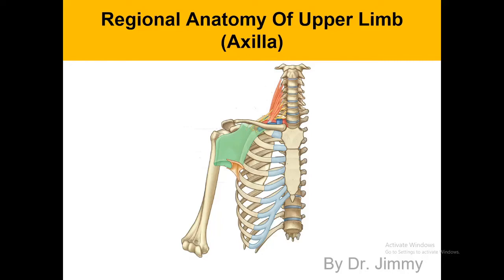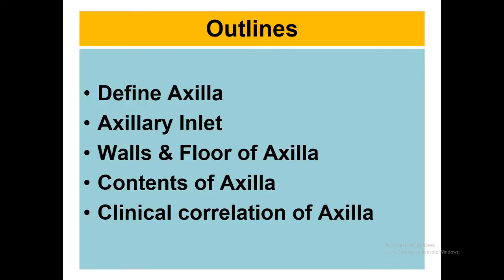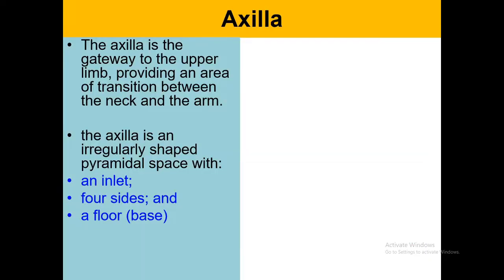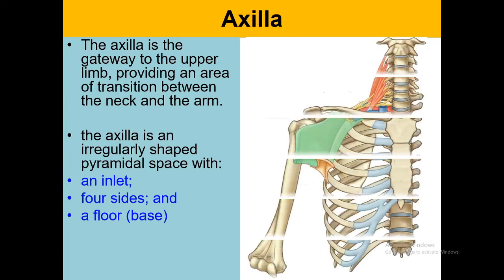We're going to talk about the original anatomy of upper limb and the topic of today is the axilla. Axilla is the number one transition area of the upper limb. Axilla is the gateway to the upper limb, providing an area of transition between the neck and the arm. As you can see, this green color is representing the axilla — it is an irregular-shaped pyramidal space.